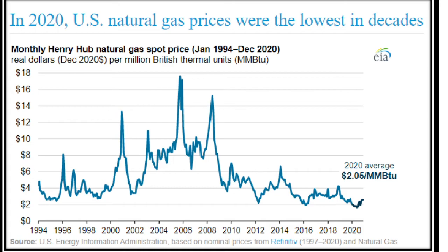Beginning in March, spring weather and responses to COVID-19 drove down natural gas demand, lowering prices. The Henry Hub price averaged $1.66 per million BTU in June — the lowest monthly price in decades. Prices increased in the second half of the year because of lower natural gas production and an increase in liquefied natural gas exports.